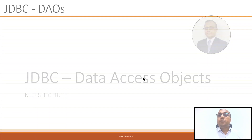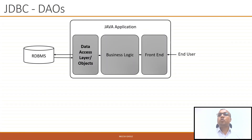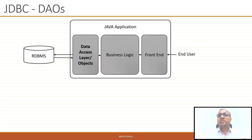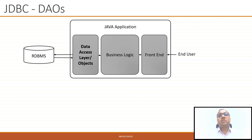A typical Java application involving JDBC looks like this, where the end user refers to the front end. The front end will execute the business logic, and most of the time business logic needs some data taken from the database, which is typically done by a set of classes called the data access object or data access layer. This sort of application where you can see three clear different parts can be referred to as a three-tier application. In this demo, we will show how to implement the data access object and how to call them from the main class directly.